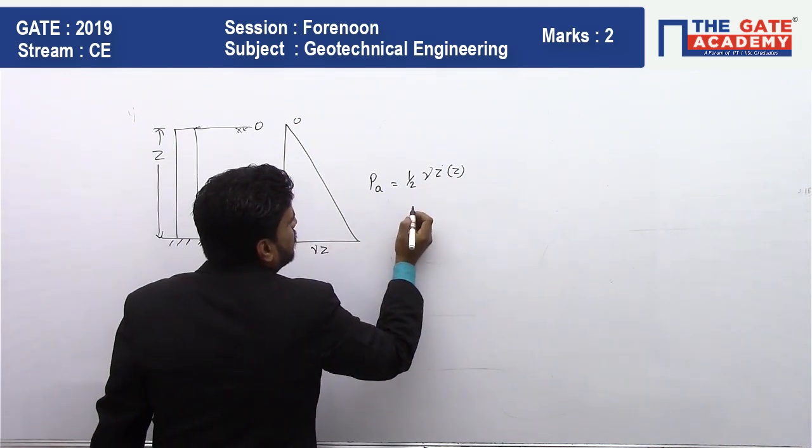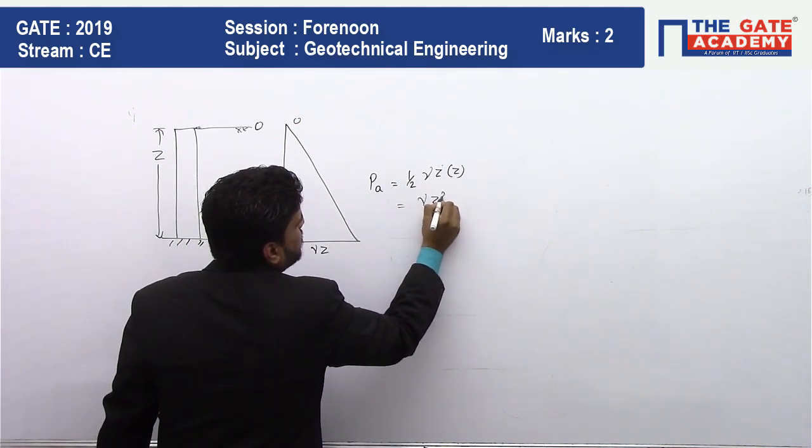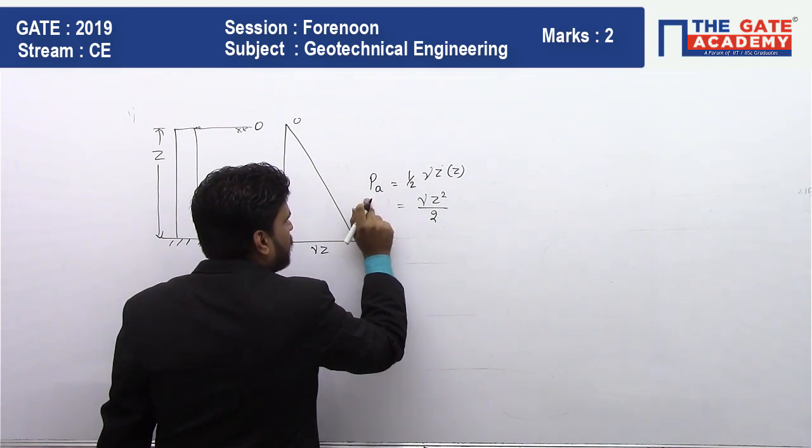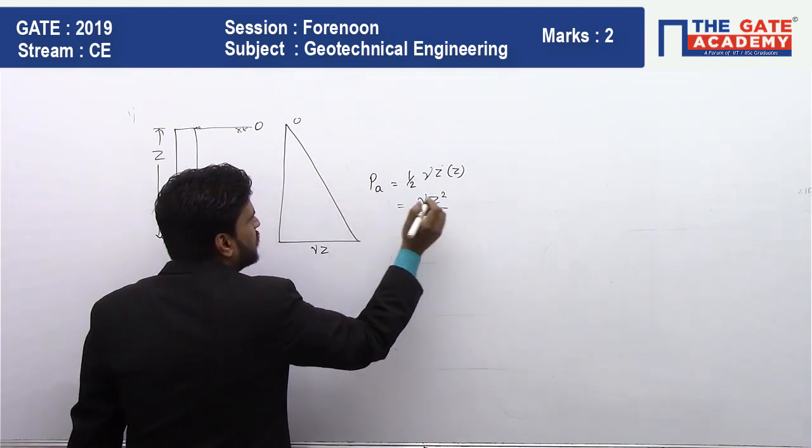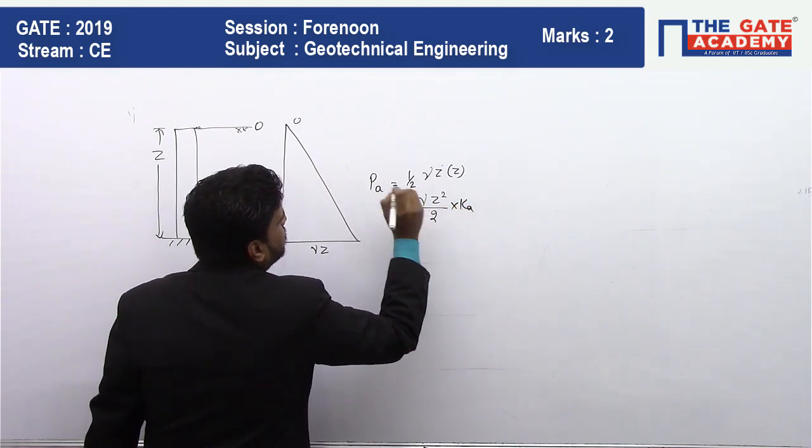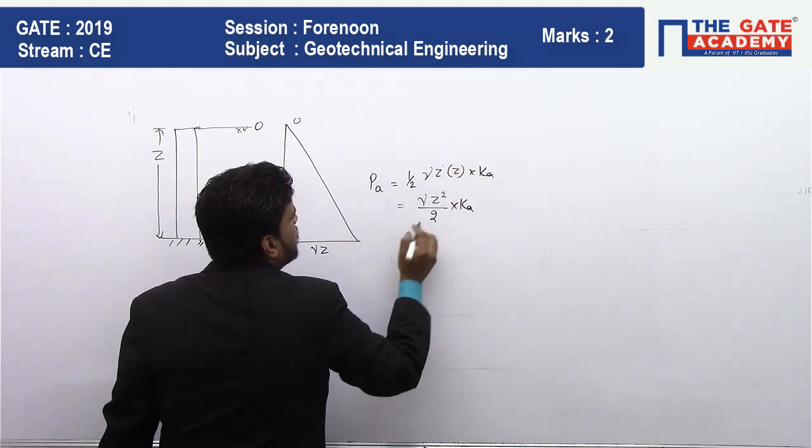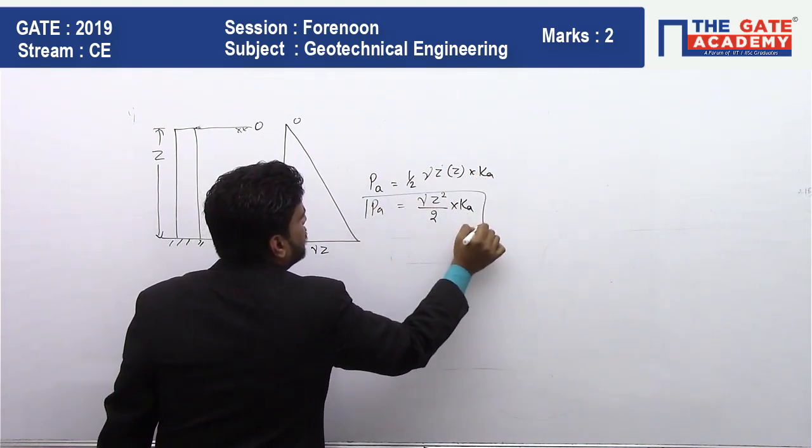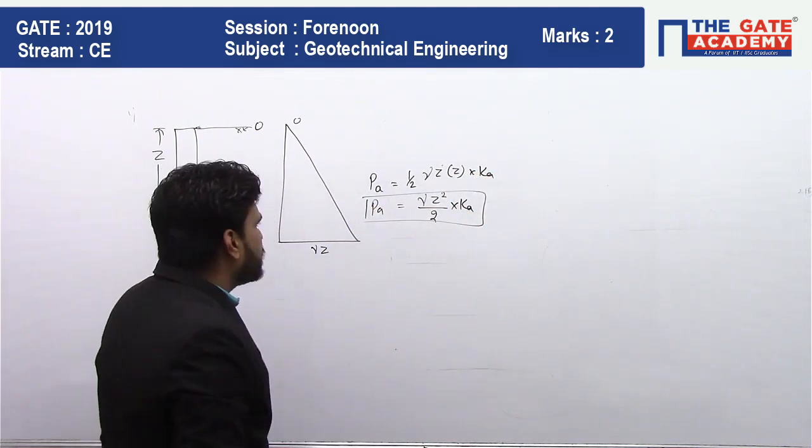This is the area, so half gamma z squared by two. Now if you are calculating active earth pressure, multiply by k. So this is the active earth pressure.